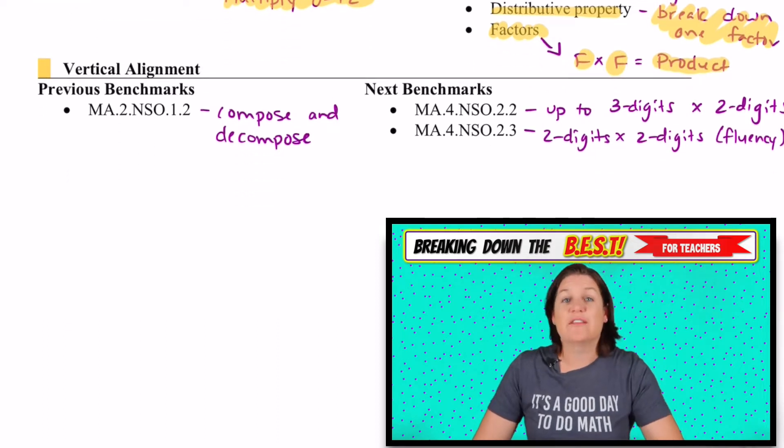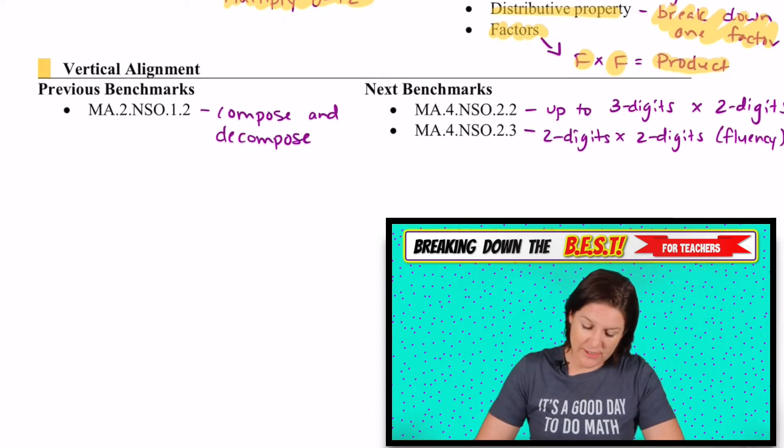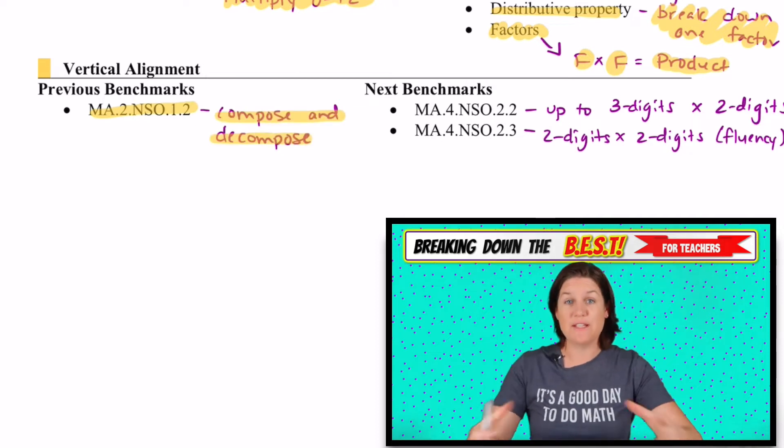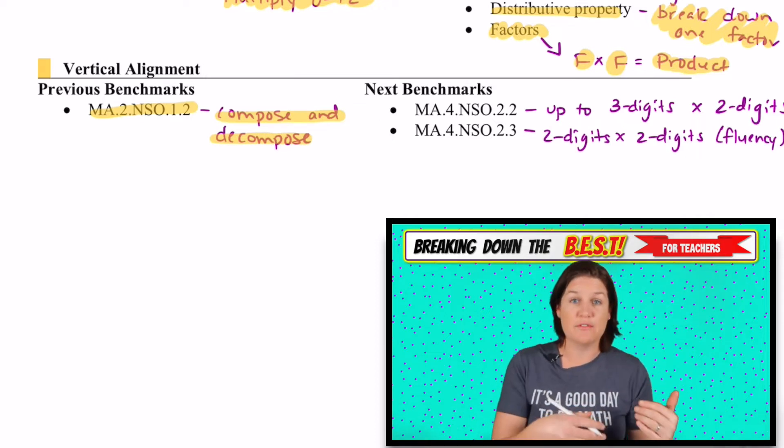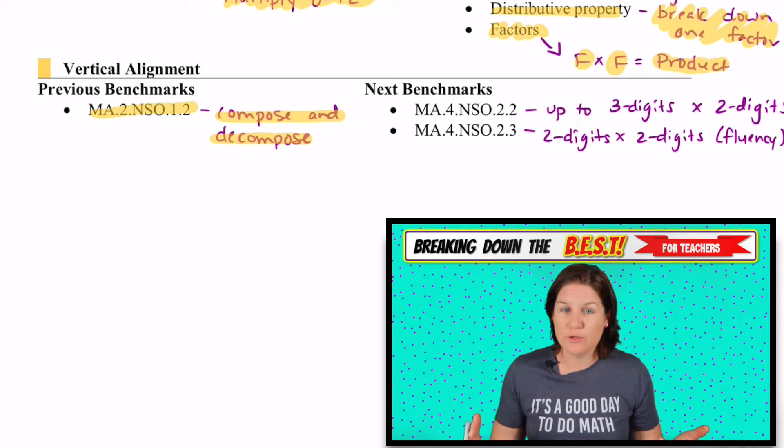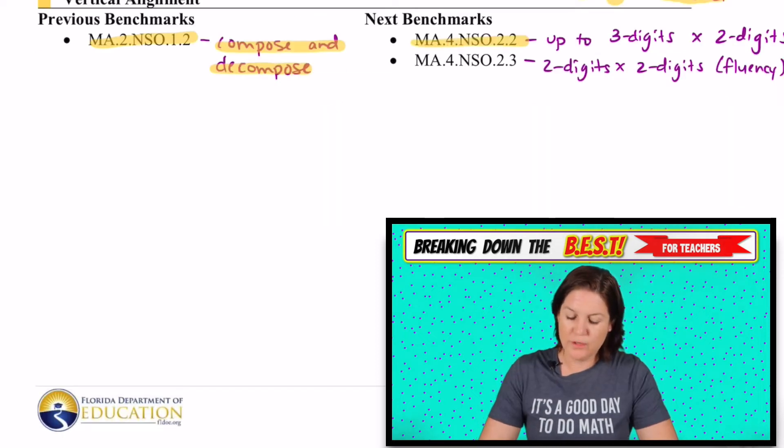Vertical alignment. Where are they coming from? Well, in second grade, they have composed and decomposed numbers, which is great because they practice breaking them down. It's like 72 into 70 plus 2. So that shouldn't be the new thing.